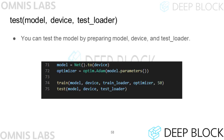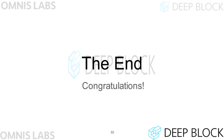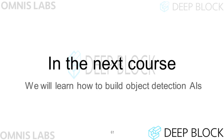In conclusion, the test function can be called by passing model, device, and test loader as arguments. If you train the model and call the test function, you can see that 66.26% accuracy is printed to the console. This concludes the introduction to deep learning course. Congratulations! In the next course, we will learn how to build an object detection AI.